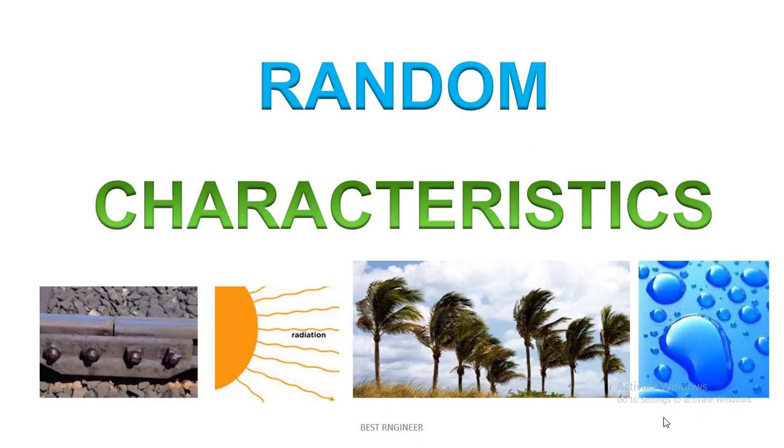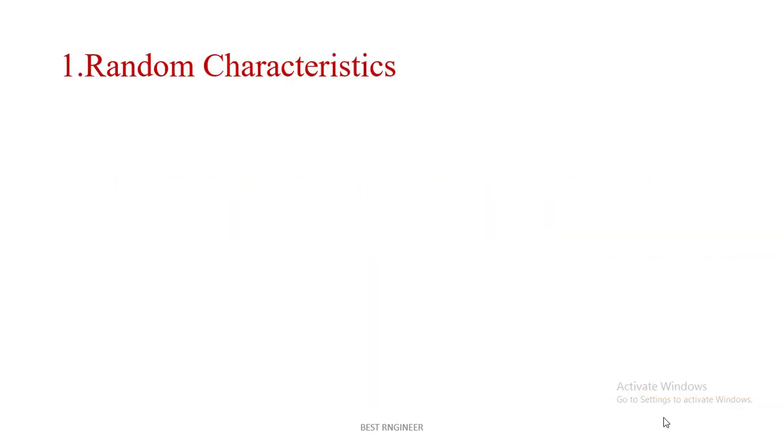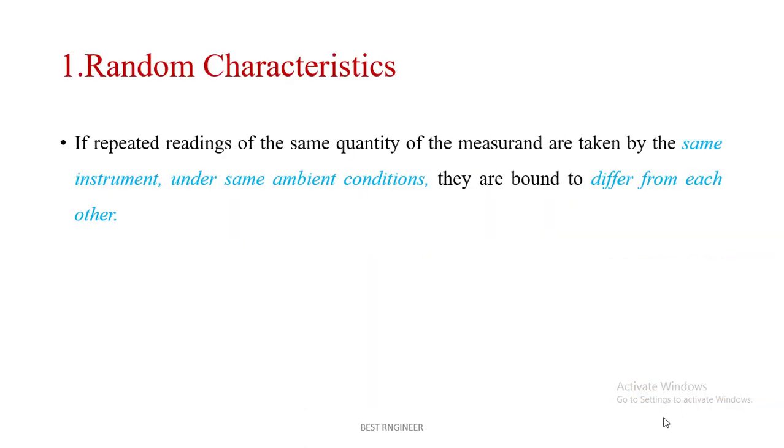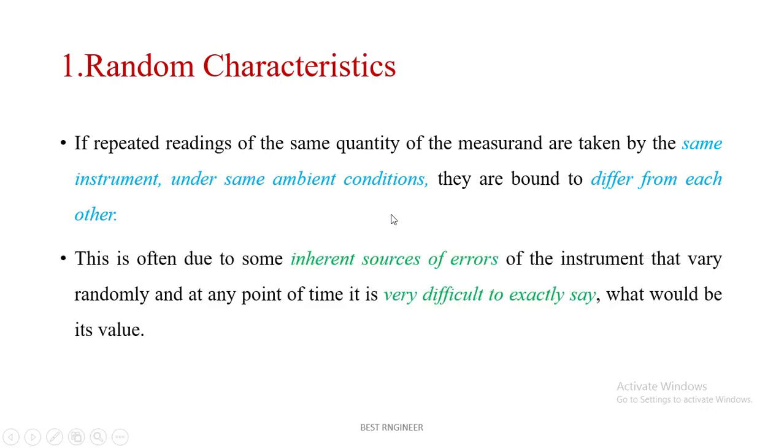Hi, let me see the random characteristics of measuring instruments. Random characteristics. If repeated readings of the same quantity of the measurand are taken by the same instrument under same ambient conditions, they are bound to differ from each other. This is called random characteristics.